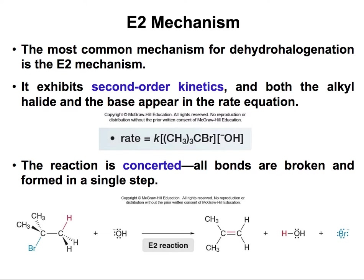The most common mechanism for eliminations is the E2 mechanism. It shows second-order kinetics, which means that both the alkyl halide and the base will appear in the rate of the reaction. This is very similar to the SN2 reaction — in SN2 the rate was determined by the alkyl halide and the nucleophile, and in E2 the rate is determined by the alkyl halide and the base.